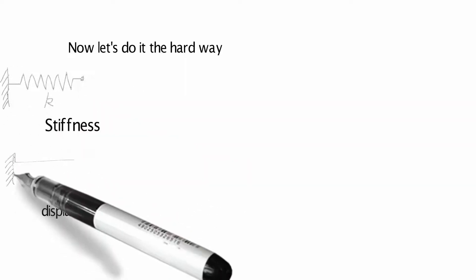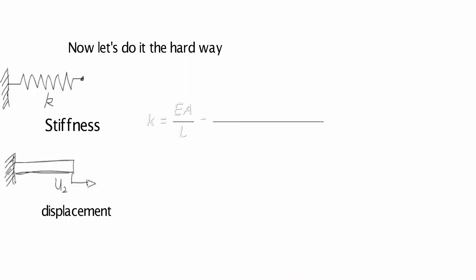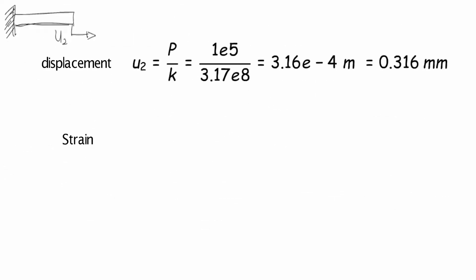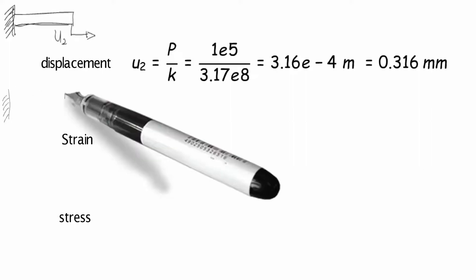However, we can now try the hard way. We establish first the equivalent axial spring stiffness and then the displacement. From the previous video, stiffness is EA over L. Displacement is found by inverting the stiffness and multiplying by the load. And we get 0.316 millimeters.